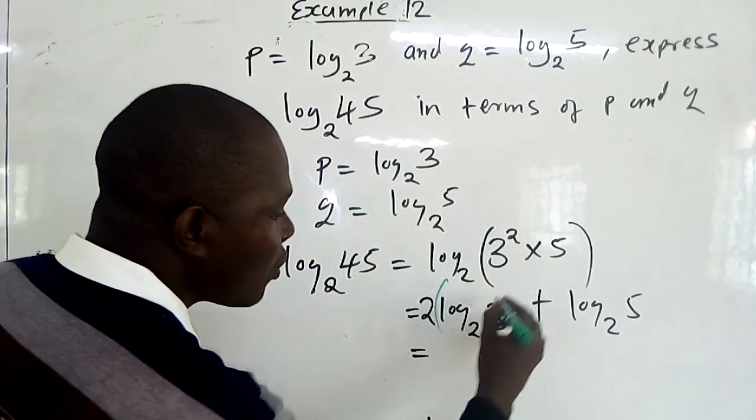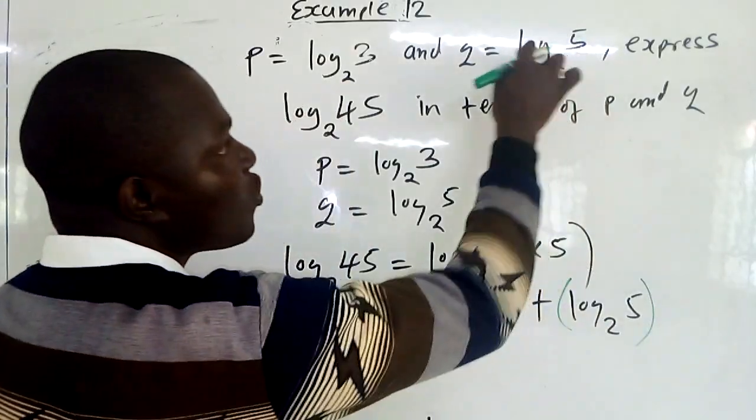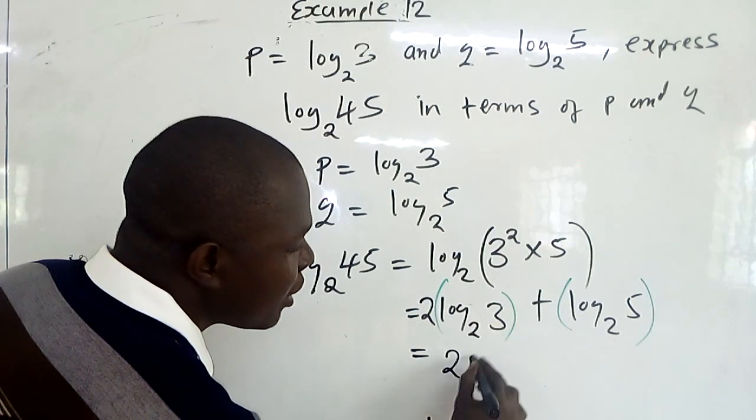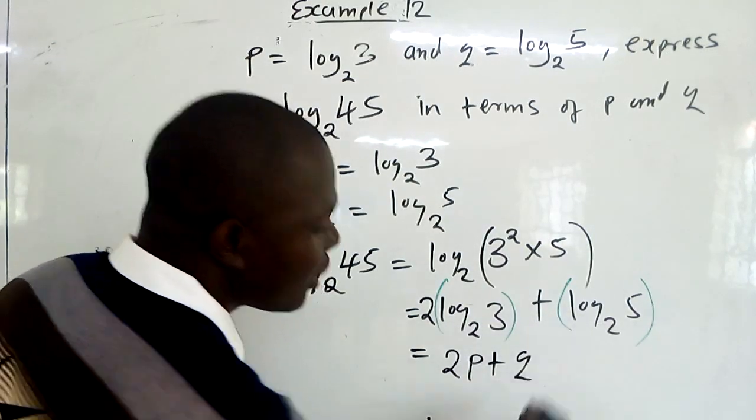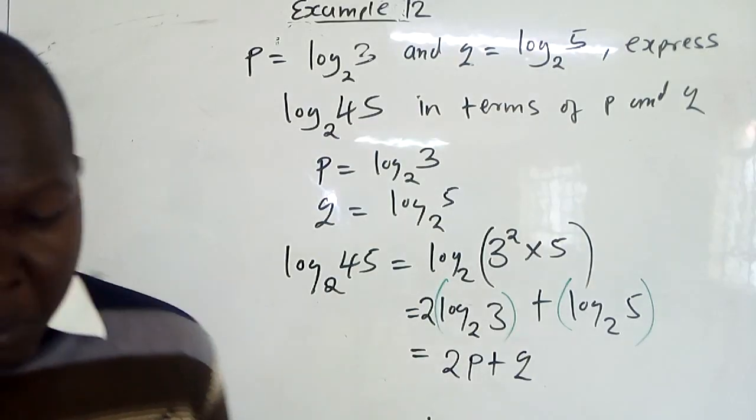Log 3 to base 2 is the same as P. Then log 5 to base 2 is the same as Q. So when you substitute, you get 2 times P plus Q. And you get rid of that problem accordingly.